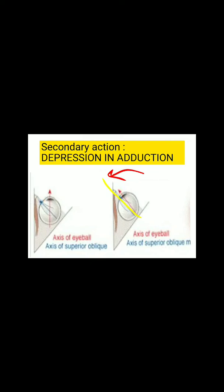Whereas when the eye turns inwards, that means when the eye is adducting, the visual axis coincides with the angle of insertion, and at this point the superior oblique acts as a depressor. This is a very important point: the superior oblique acts as a depressor in adduction.